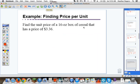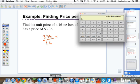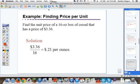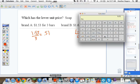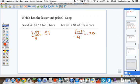So let's find the unit price of a 16 ounce box of cereal that has a price of $3.36. Well I'm going to take my $3.36, I'm going to divide it by 16, get my calculator out, and I get .21 cents, so 21 cents per ounce. Here, which has the lower unit price? This would be bars of soap. Brand A is $1.53 for three bars, brand B is $1.61 for four bars. Some people say, well, $1.53 is cheaper, that's what I'm going to buy. But let's go ahead and find the unit price. $1.53 divided by three is going to be .51. $1.61 divided by four is going to be .40. So which is the better deal? Obviously, brand B, you're going to go with brand B. That's the type of stuff you're going to see on the homework.